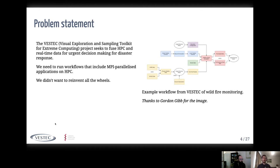One of the things we need to do is run workflows that include MPI-parallelized applications for doing simulations. These need to be running on proper high performance computing — tens to tens of thousands of cores. My colleague Gordon is going to talk about this in one of the other SC workshops on urgent HPC.